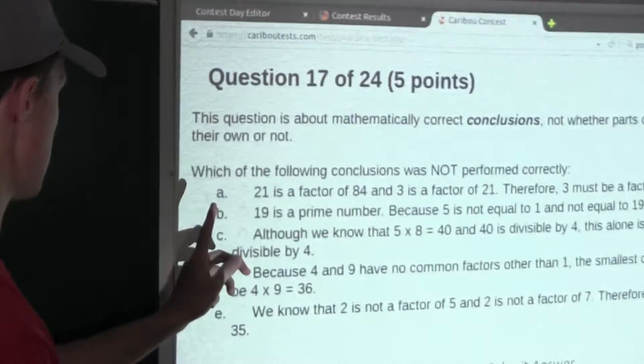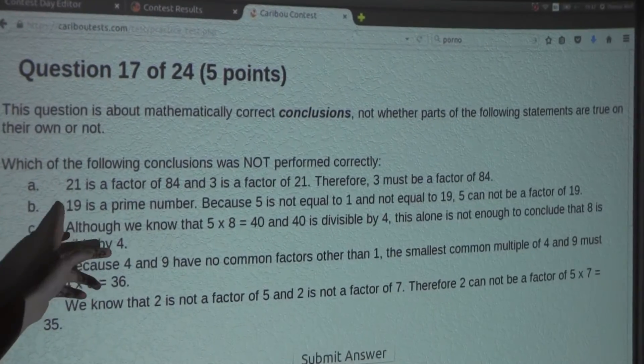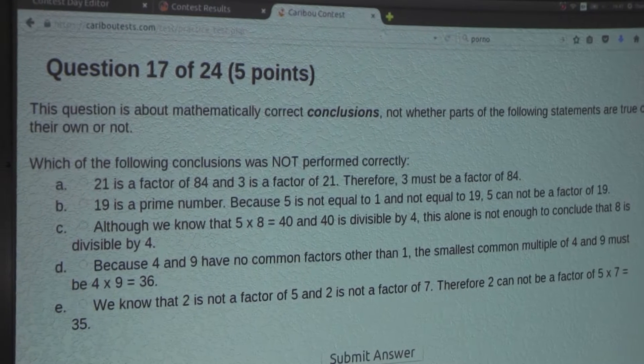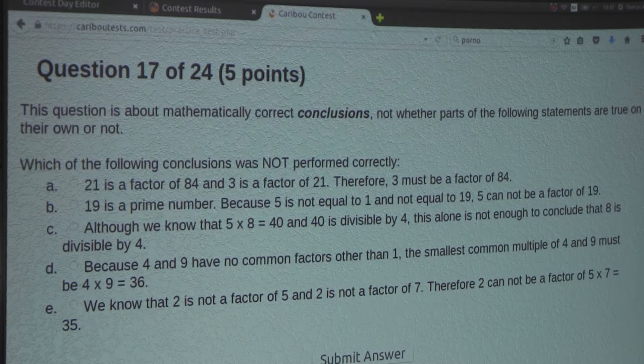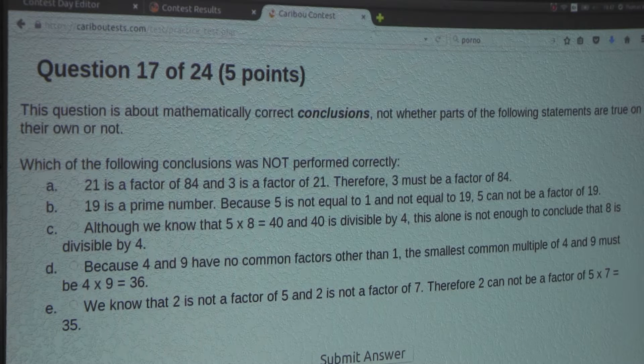So, let's look at option B. Nineteen is a prime number. Because 5 is not equal to 1 and not equal to 19, 5 cannot be a factor of 19.